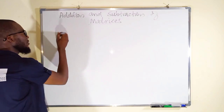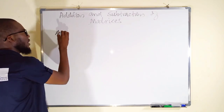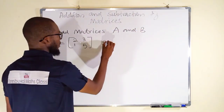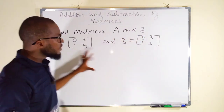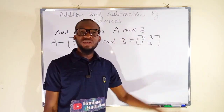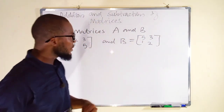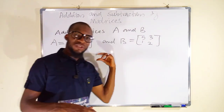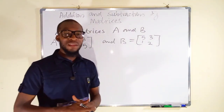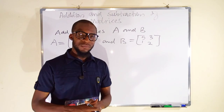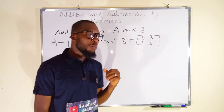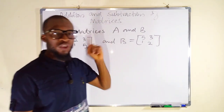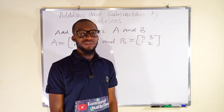Okay, let's get started. Example: let us add matrix A and B. You can see these two matrices are of the same dimension — two by two matrices. To add them, you must add each element to its corresponding element in the other matrix.